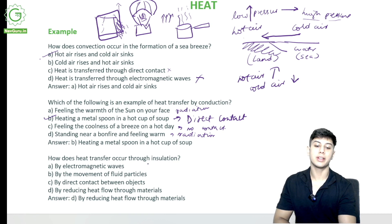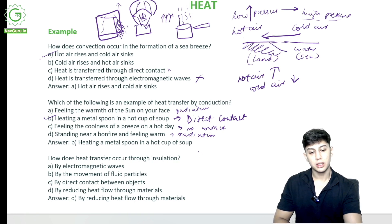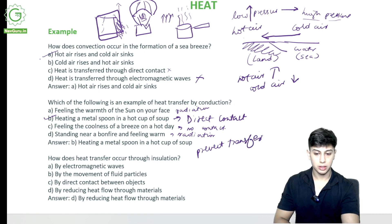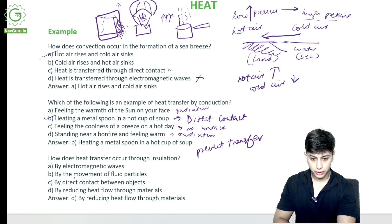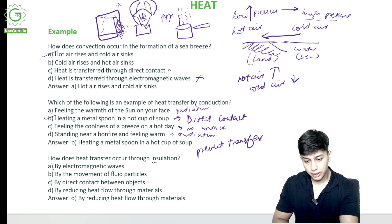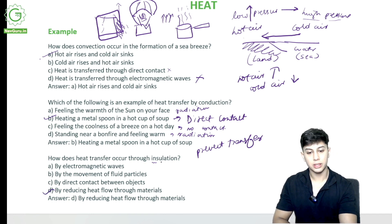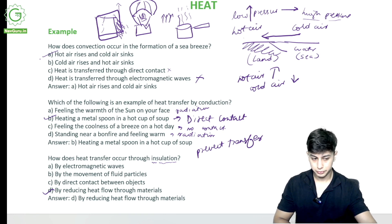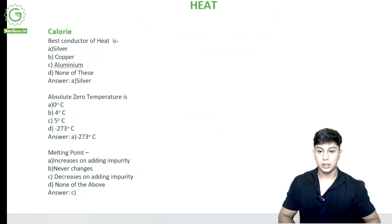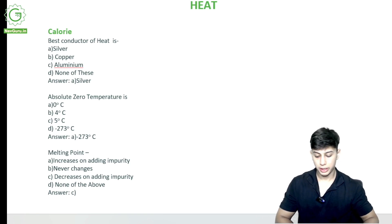How does heat transfer occur through insulation? Insulation means we prevent transfer. The correct option is: by reducing heat flow through materials. Insulation prevents heat transfer by reducing the heat flow through materials.